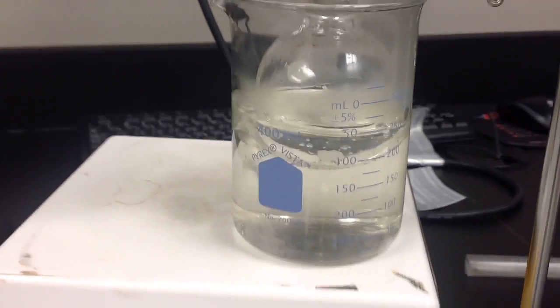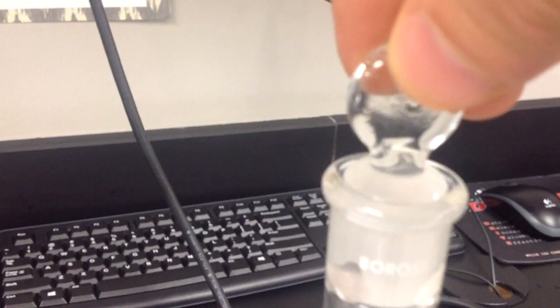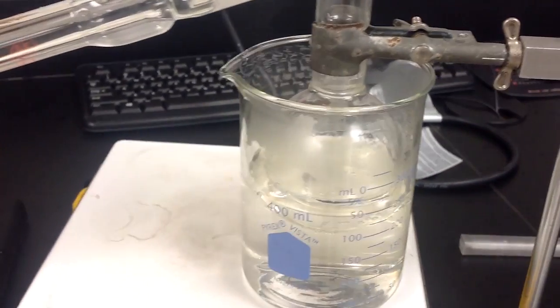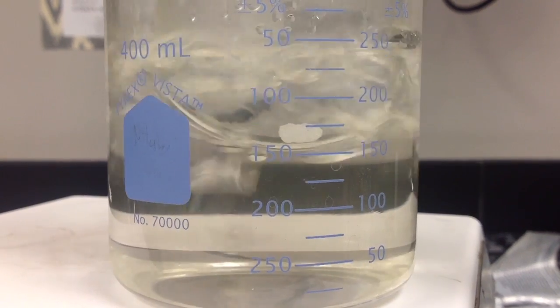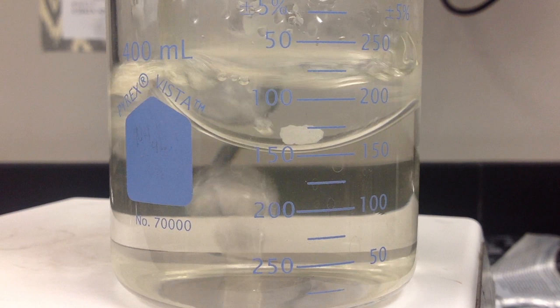As the mixture heats up, vapors start to form, so we stopper the flask to trap them in and force them into the condenser on the side. Once the mixture reaches 83 degrees, bubbles of alcohol vapor start to form on the boiling stone.